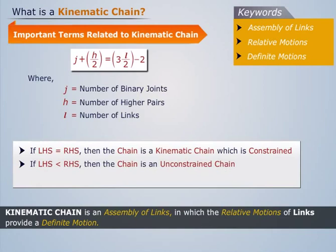If the value at the left-hand side is less than the value at the right-hand side, then the chain is an unconstrained chain.